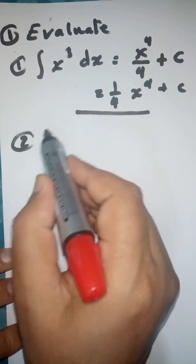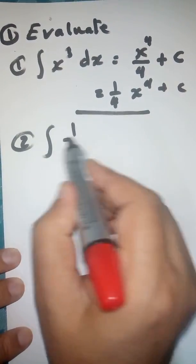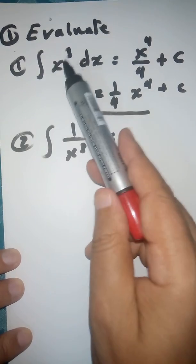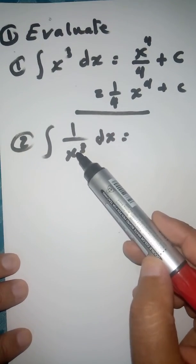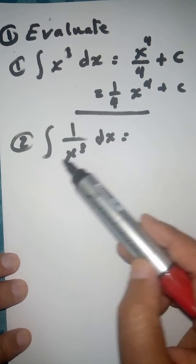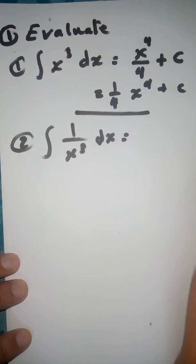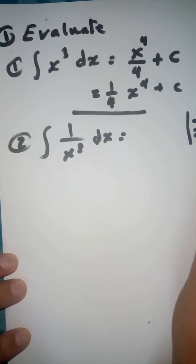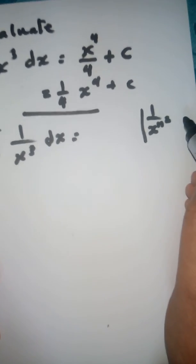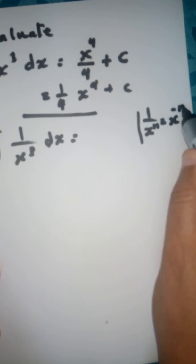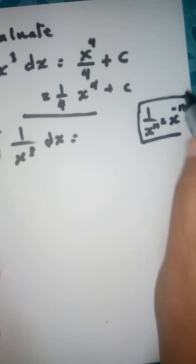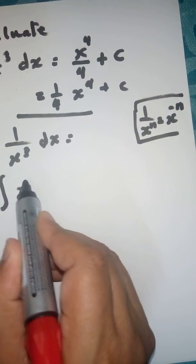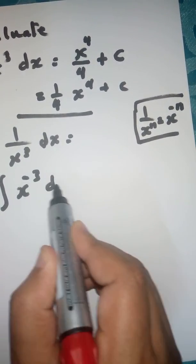Number two: if you have the integral of 1 over X cubed dx, here we have 1 over X to the power 3, which is a rational form. You can rewrite 1 over X to the power 3 using the exponent rule: 1 over X to the power N equals X to the power negative N. Apply this rule to get the integral of X to the power negative 3 with respect to X.